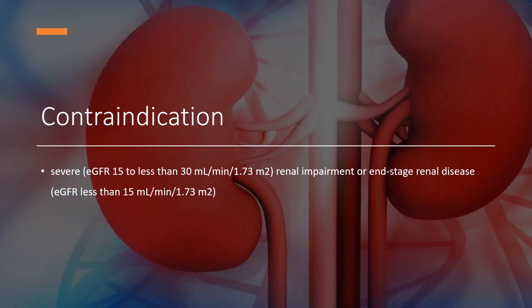Contraindication. Fezolinetant is contraindicated in individuals with severe renal impairment (eGFR 15 to less than 30 mL/min/1.73 m²) or end-stage renal disease (eGFR less than 15 mL/min/1.73 m²).